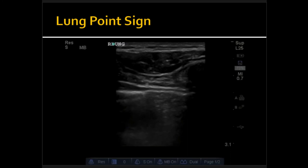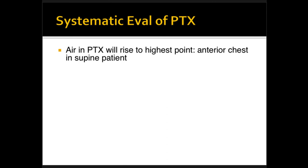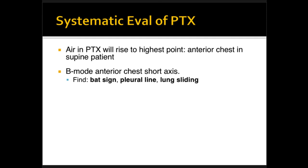Systematic evaluation of pneumothorax: the air will rise to its highest point, which is why you scan anteriorly. With the patient supine, the air rises to the top. Place the probe in short axis with the indicator toward the head. On 2D mode, find the BAT sign, look for the pleural line, assess A and B lines, and lung sliding. Those confirm normal findings. Then move down rib by rib, especially with high clinical suspicion for pneumothorax.